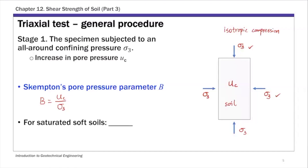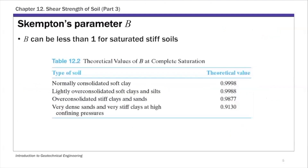There is also anisotropic compression where different pressures are used in the vertical direction. For saturated soft soils, Skempton's pore pressure parameter B is typically very close to one. The table shows that normally consolidated soft clay has a B value very close to one, while lightly overconsolidated, overconsolidated, and very dense stiff clays have decreasing B values.